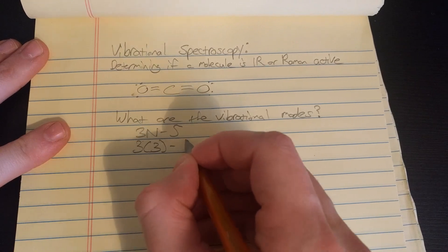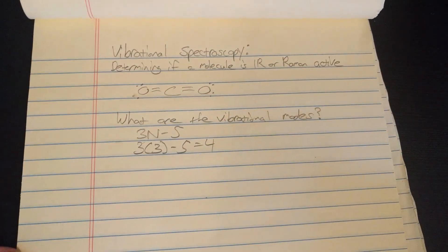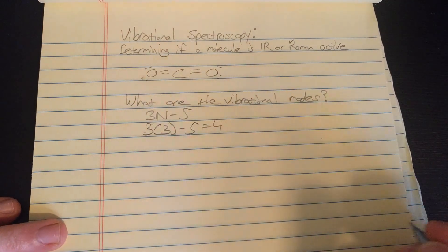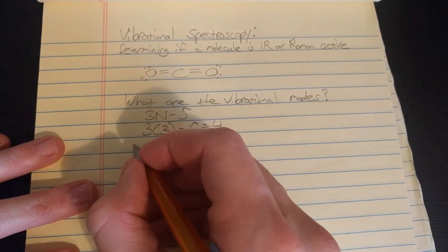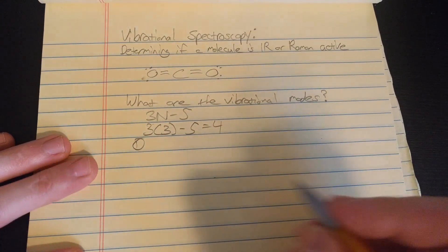So we have three atoms, we'll plug 3 in for n and we get 4. So we have four vibrational modes. Now what are those vibrational modes? Let's draw them out here.